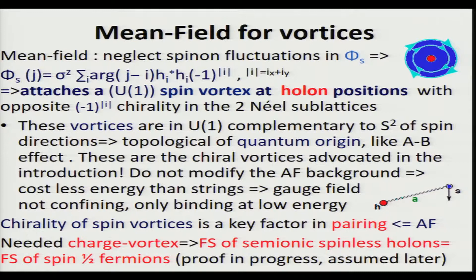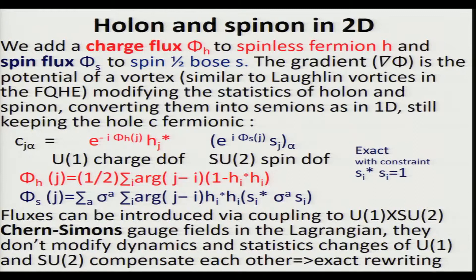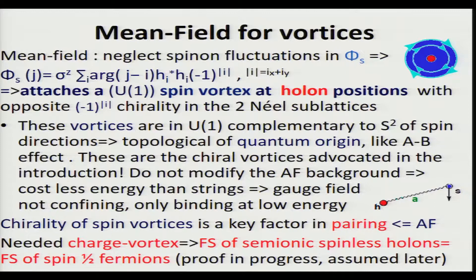Now we start to do an approximation. We do a mean field in which we neglect the spinon fluctuation in the spin flux. Then the spin flux becomes very simple, and its meaning is clear: you attach one spin vortex at the holon position, with opposite chirality in the two Néel sublattices. This is due to the fact that the spin flux is basically concentrated at plus and minus one in the direction of the magnetization.